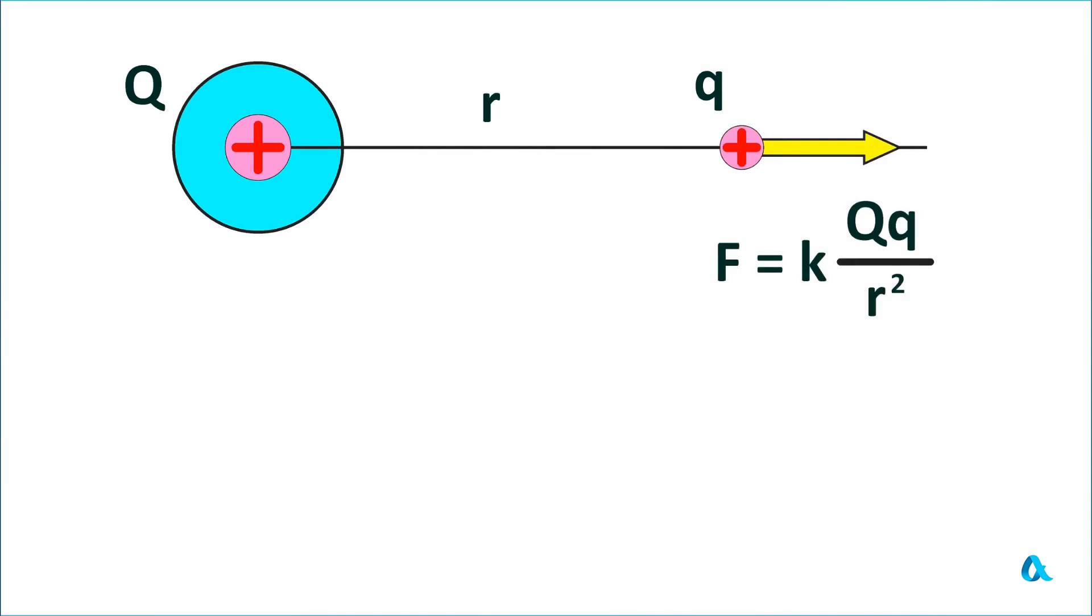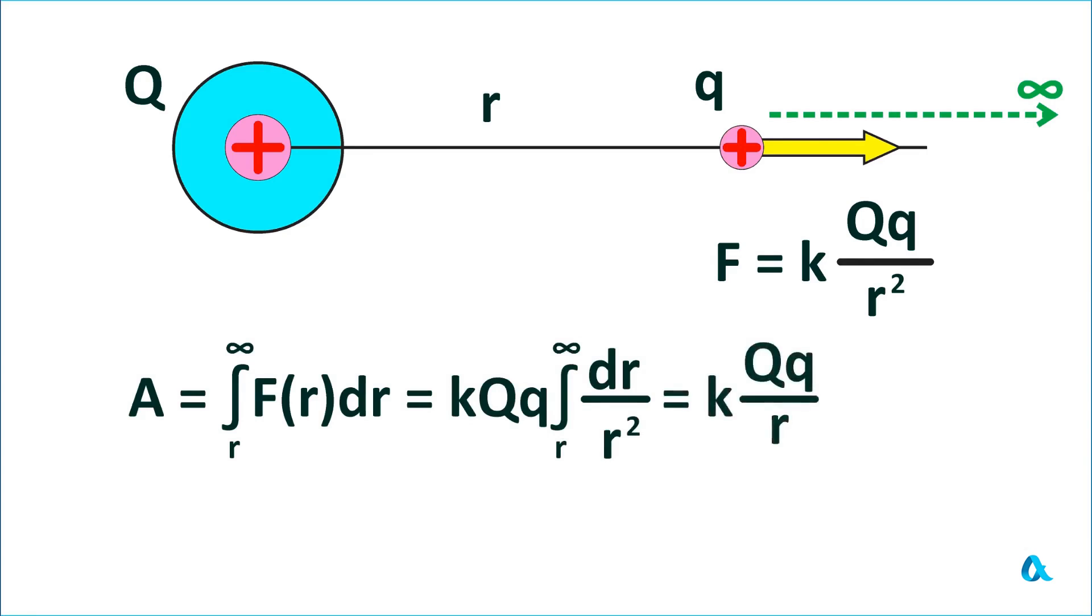Now we need to consider the work done by an external force required to move the test charge to the point where it is now from an infinite distance. Or, equivalently, the work that the Coulomb force would do moving the charge from this point to infinity. This work is equal to the integral of the Coulomb force from r to infinity. As kQq is factored out of the integral sign, you need to take the integral of 1/r² with respect to dr within these limits, which equals 1/r.